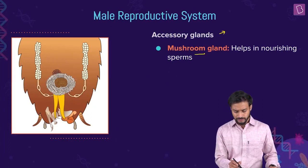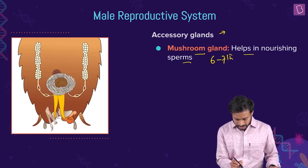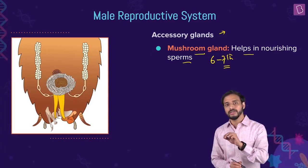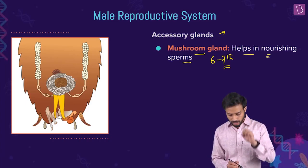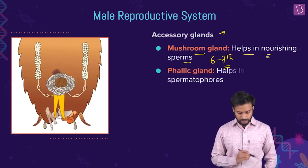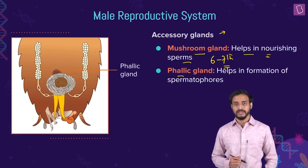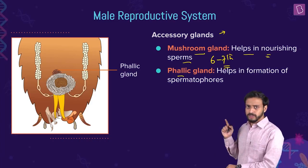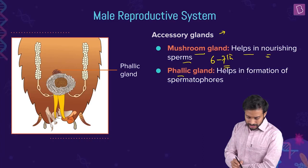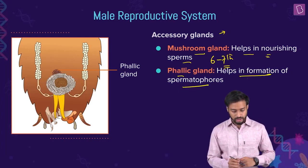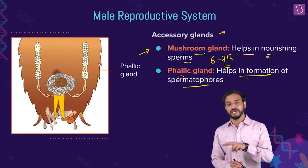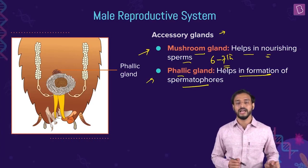The accessory glands include the mushroom gland and the phallic gland. The mushroom glands are present in the sixth to seventh abdominal segments and help in nourishing the sperms — they are small and long tubules. The phallic gland helps in the formation of spermatophores. So: mushroom glands nourish sperms, phallic gland forms spermatophores.